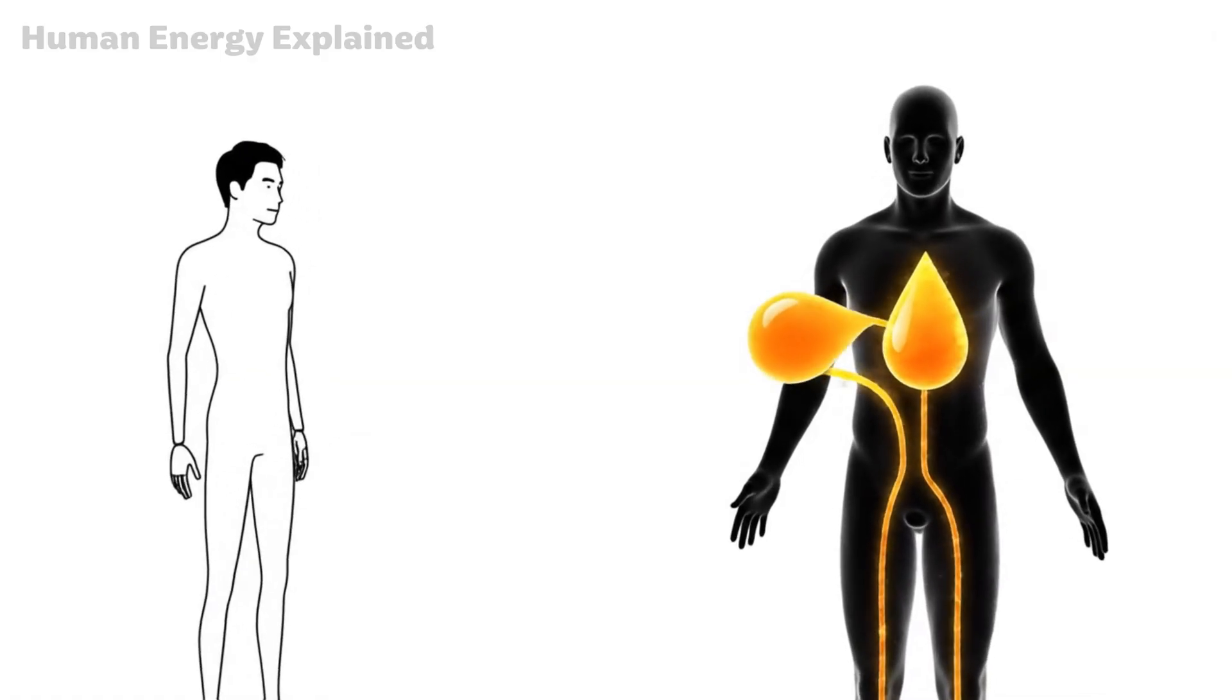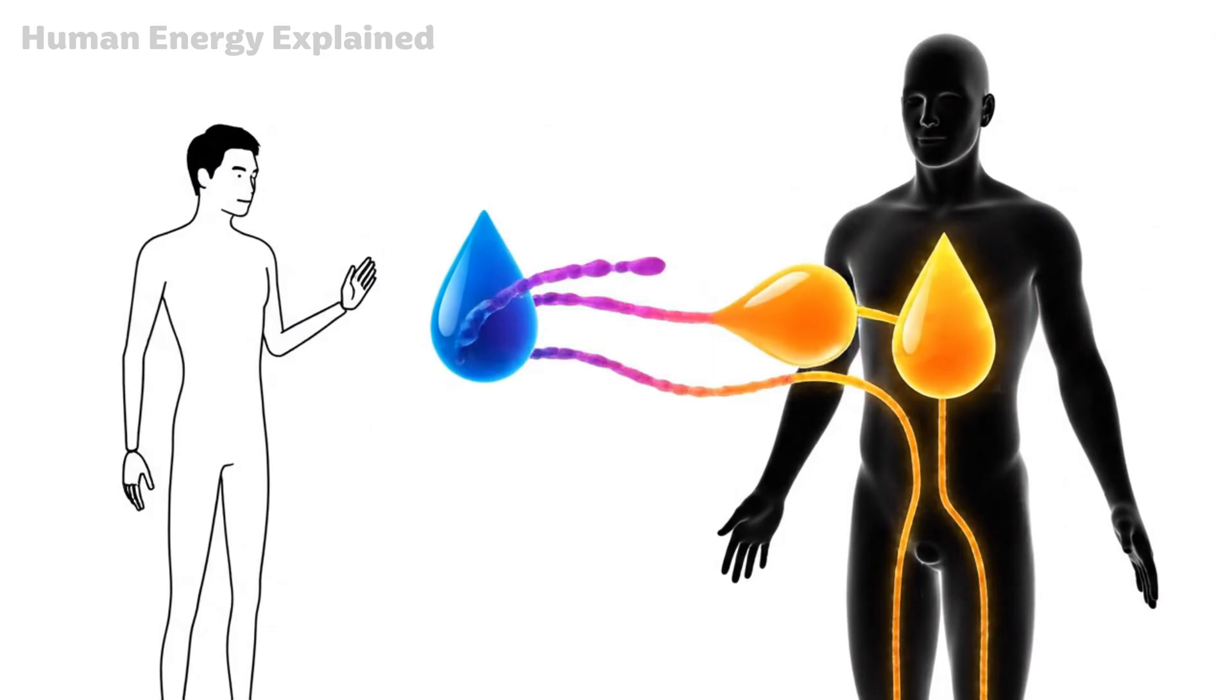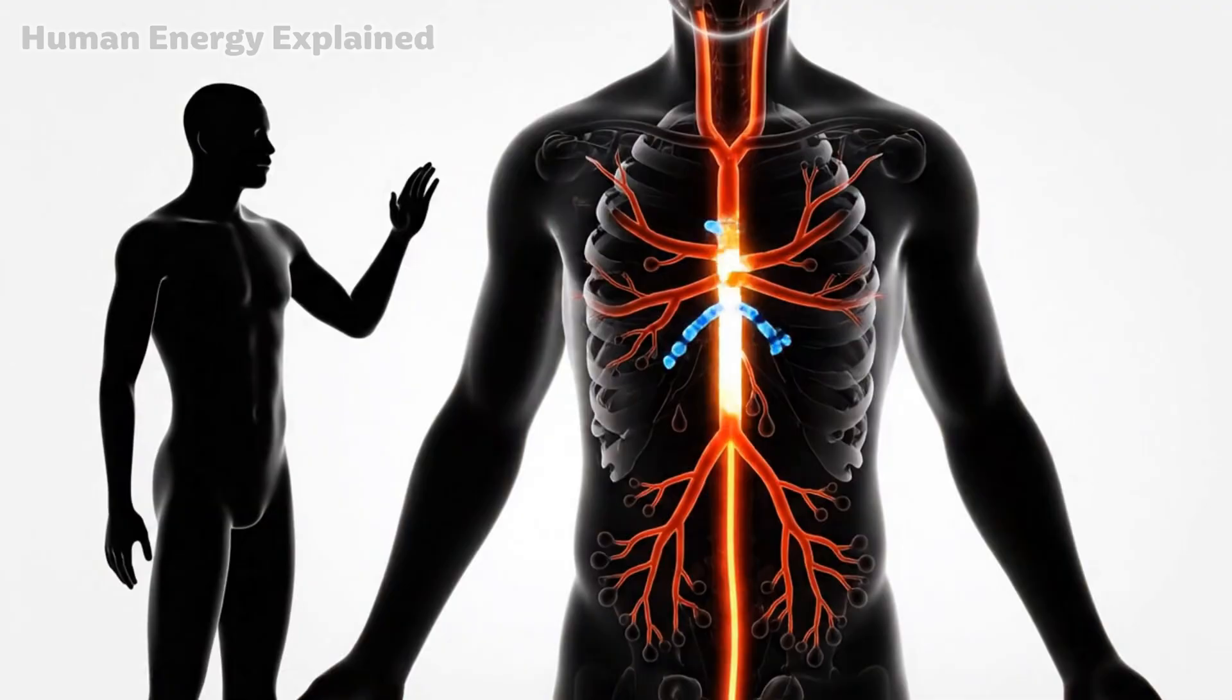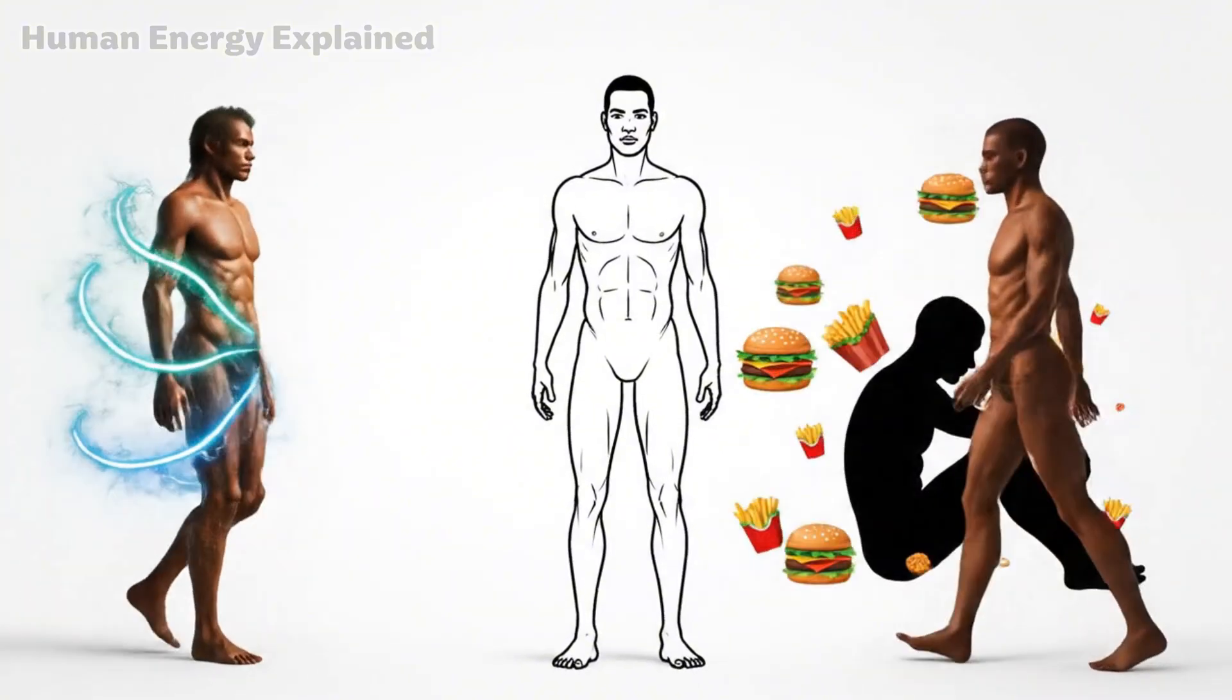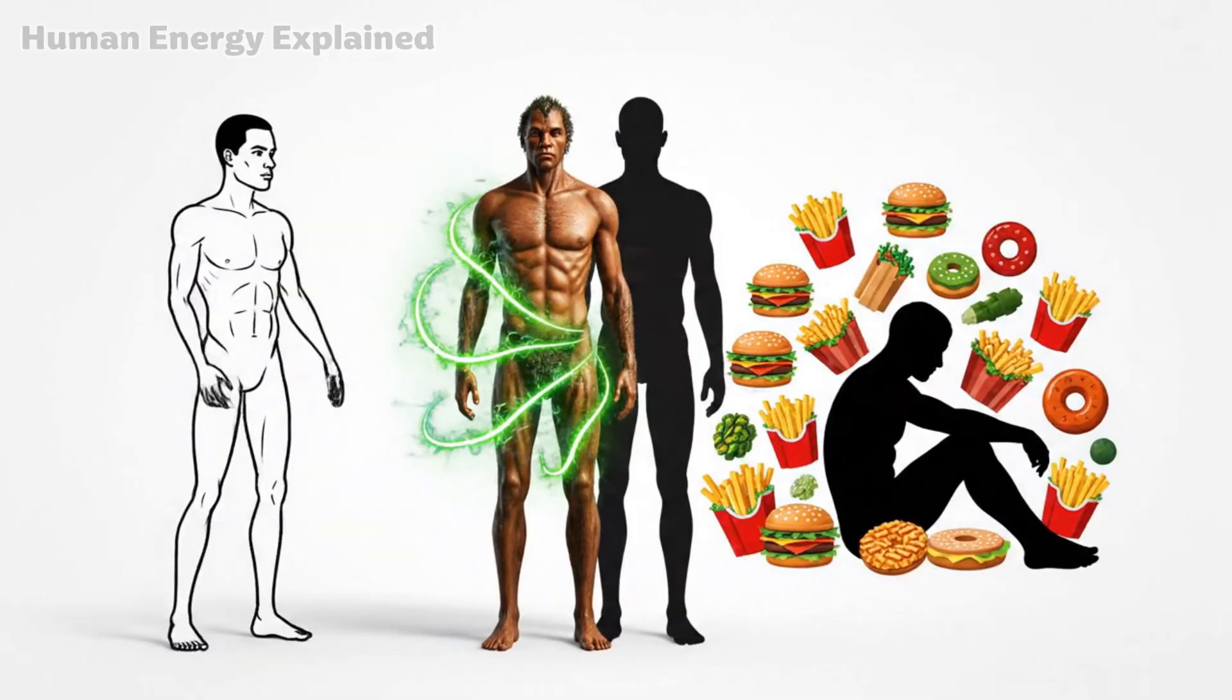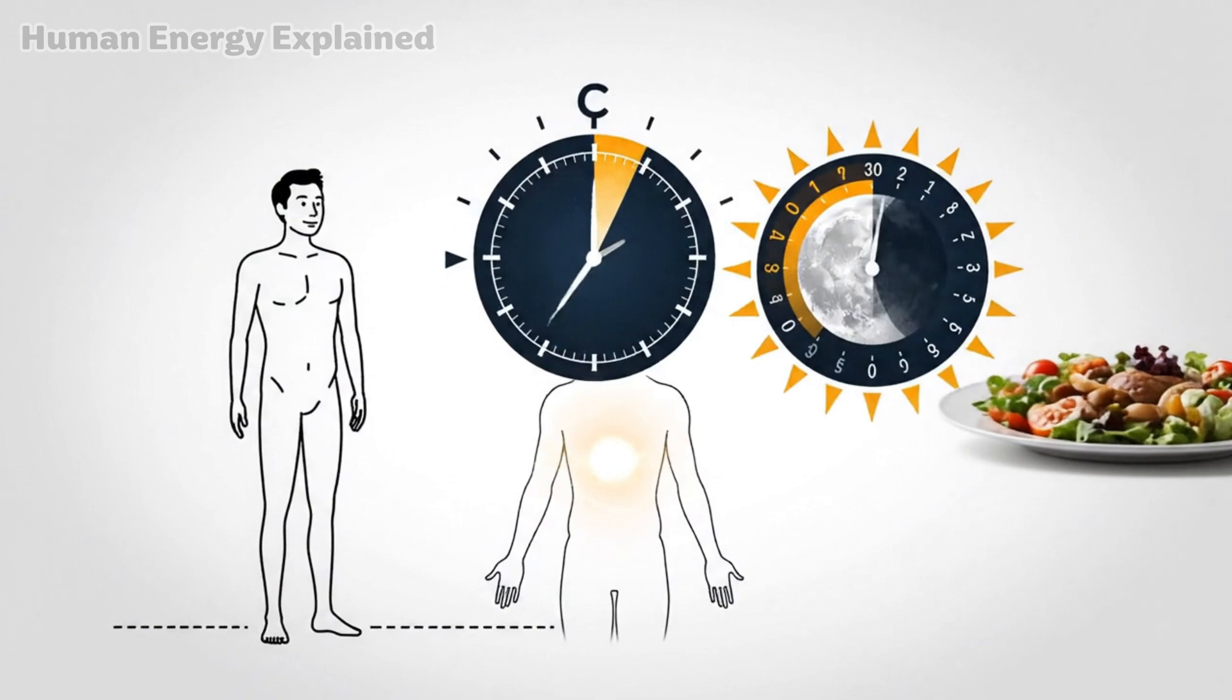Now it speaks two languages fluently, glucose and ketones, and can switch between them effortlessly. You've gone from metabolically rigid to metabolically adaptable. This is the state human bodies were designed to operate in before modern food availability made constant eating possible.